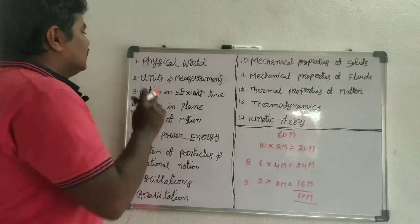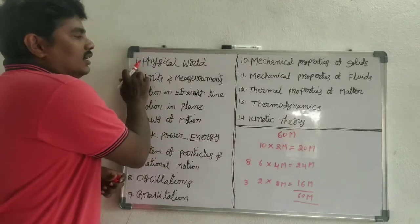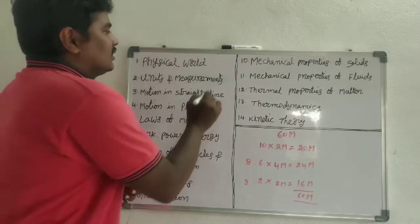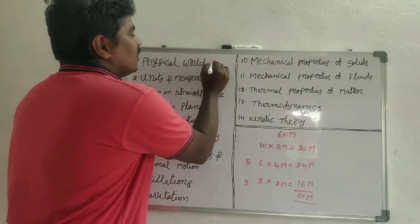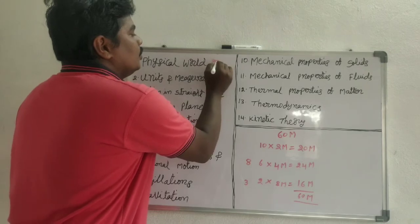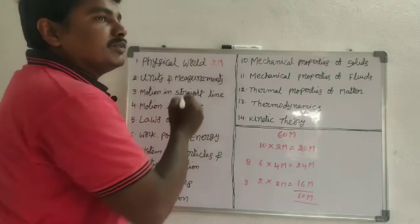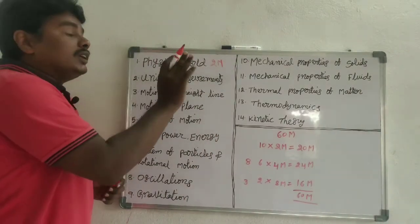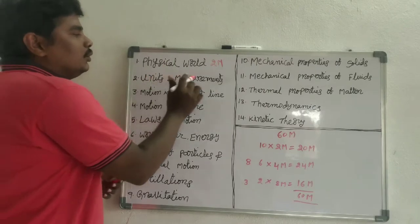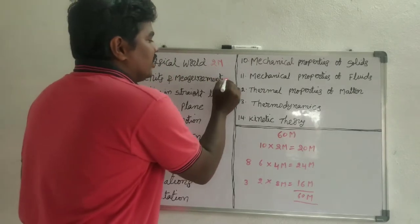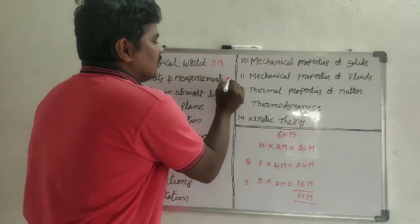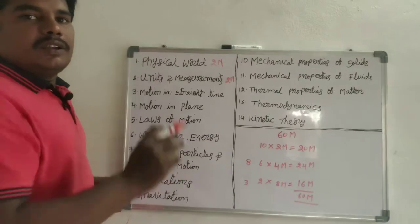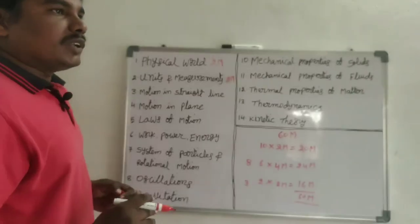In our syllabus, the first chapter is Physical World — we get 2-mark questions from this chapter. The second chapter is Units and Measurements — we also get 2-mark questions from this chapter.